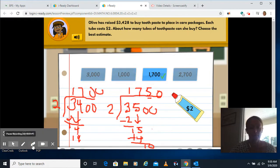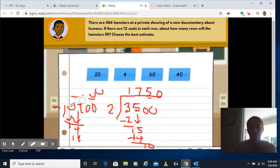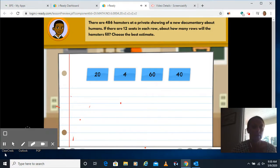Click done. Not on my eraser there. Click next. There are 486 hamsters at a private showing of a new documentary about humans. There are 12 seats in each row. About how many rows will the hamsters fill? Choose the best estimate.